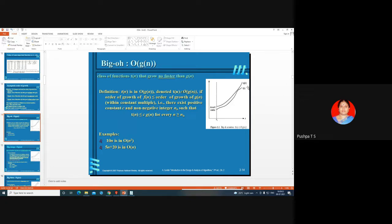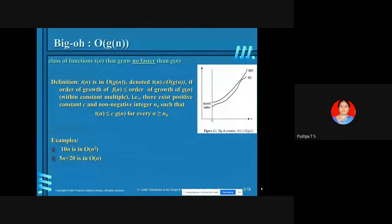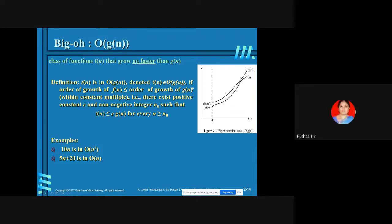Big O serves as the upper bound, and Omega serves as the lower bound. To assess exactly the order of growth of an algorithm, it is better to use Theta notation. In Theta notation, the formal definition is: a function T(N) is said to be in Theta of G(N) if and only if there exist two positive constants C1 and C2 and a non-negative integer N₀ such that C2·G(N) ≤ T(N) ≤ C1·G(N) for all N ≥ N₀. Then T(N) belongs to Theta of G(N) — T(N) is bounded both above and below by G(N).